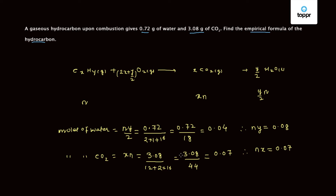So we divide NX by NY, which gives us X upon Y. This equals 0.07 upon 0.08, which simplifies to 7 upon 8. So we have X upon Y equal to 7 upon 8. Therefore the empirical formula of the hydrocarbon will be C₇H₈.